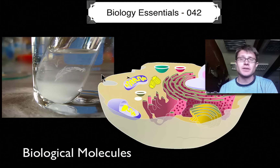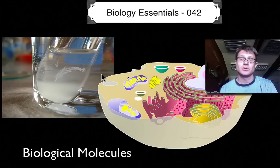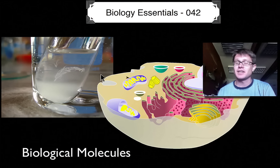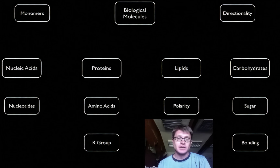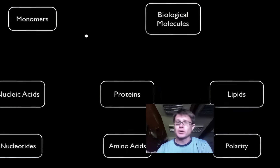But to get to it we have to go through all the other macromolecules. Nucleic acids like DNA and RNA are just one of four different types of macromolecules. In this video we're going to spend a lot of time talking about the other three. There are four different types of biological molecules: nucleic acids, proteins, lipids, and carbohydrates. You simply have to memorize those and then memorize the monomers.